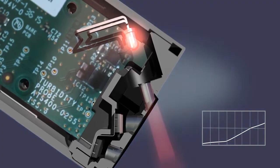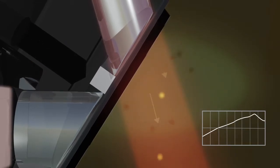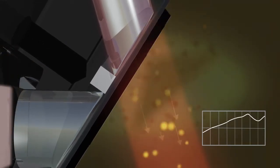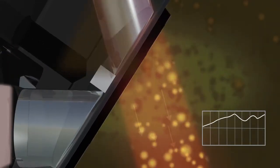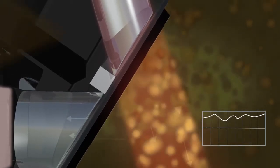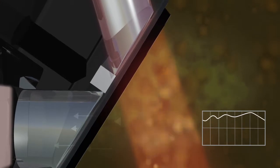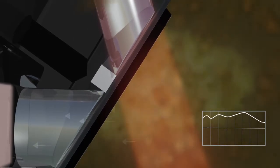The sensor directs a beam of infrared light into the sample. The light beam is scattered by particles in the sample, and the scattered light intensity is measured by the sensor's photodetector positioned at 90 degrees to the light beam. The scattered light detected by the sensor is directly proportional to the turbidity of the sample.